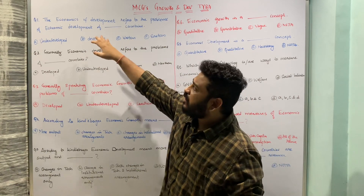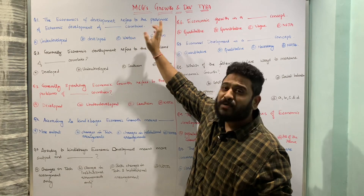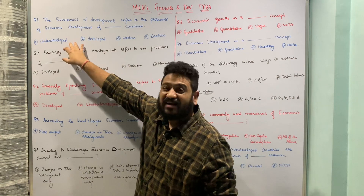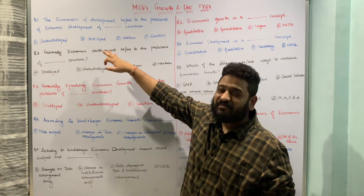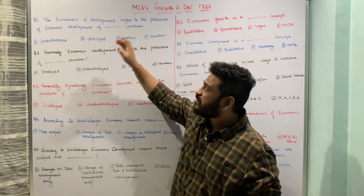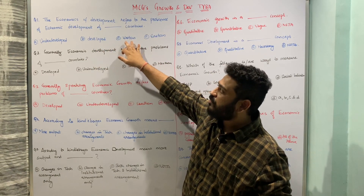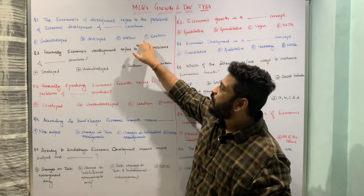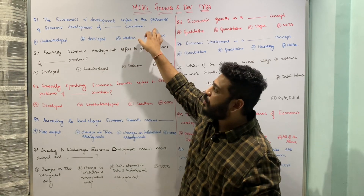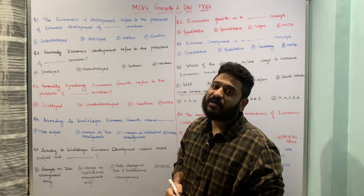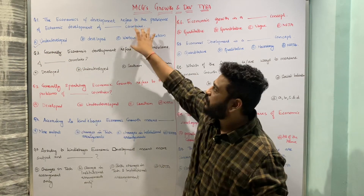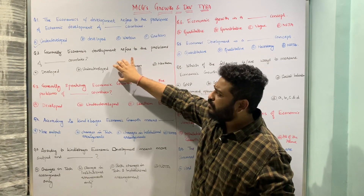The first question: 'The economics of development refers to the problems of economic development of ___ countries.' The options are: underdeveloped countries, developed countries, western countries, or eastern countries. The economics of development refers to the problems of economic development of underdeveloped countries, so option A is the correct answer.